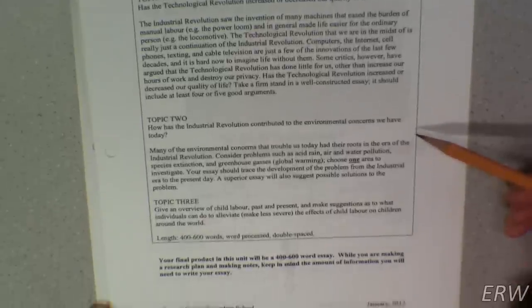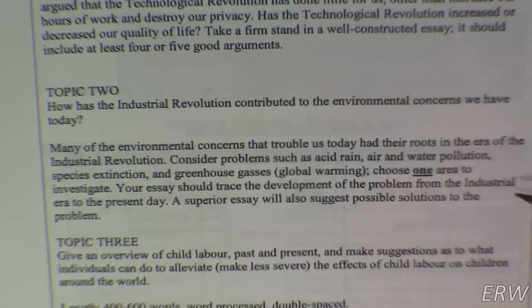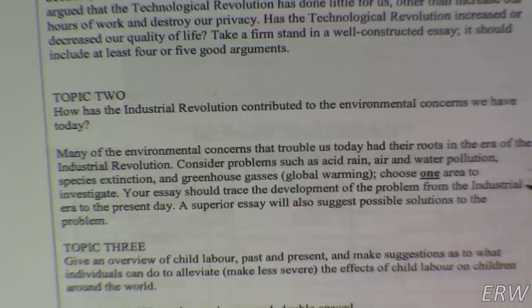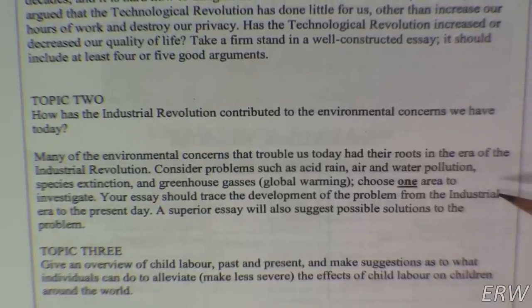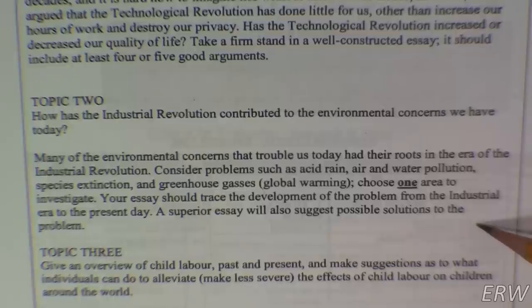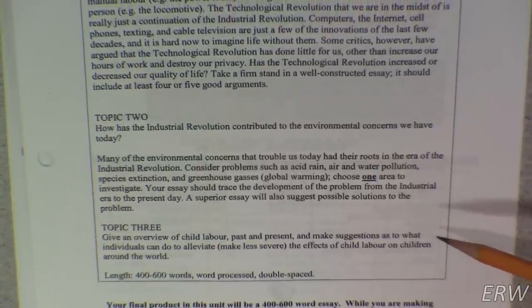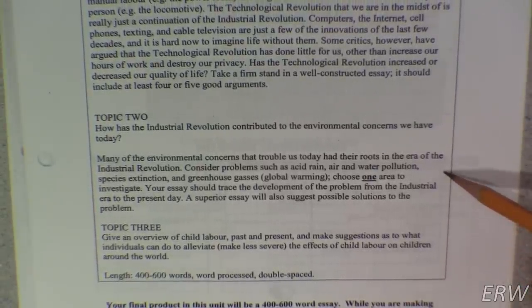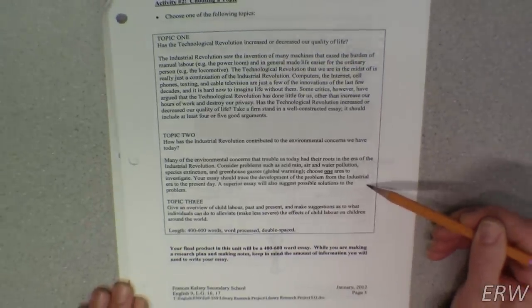Topic two asks: how has the industrial revolution contributed to the environmental concerns we have today? Many of today's environmental problems had their roots in the industrial revolution era. Consider problems such as acid rain, air and water pollution, species extinction, and greenhouse gases leading to global warming. Choose one area to investigate. Your essay should trace the development of the problem from the industrial era to the present day. A superior essay will also suggest possible solutions. Prior to the 1700s the environment was in fantastic shape, but because of industrialization and the factories, mills, and pollution they produced, we find ourselves in a difficult position.